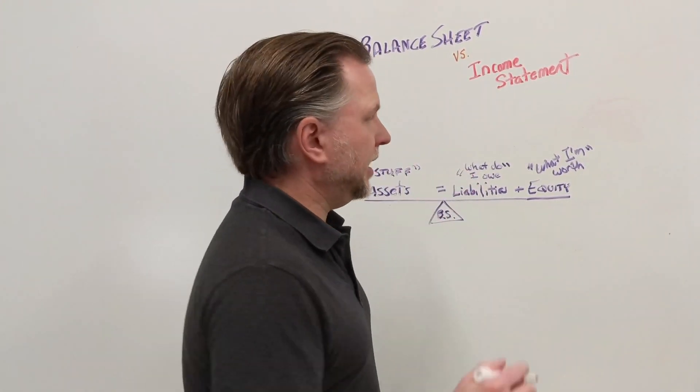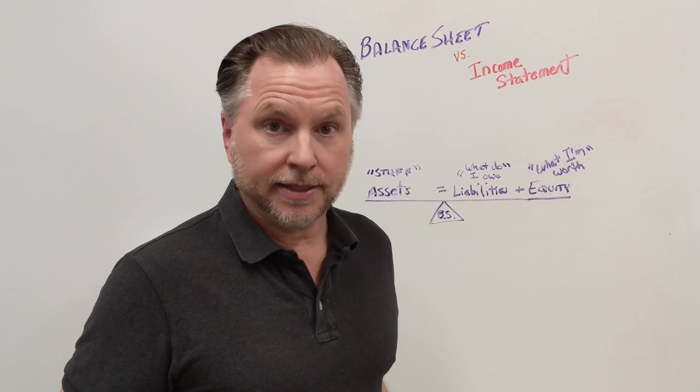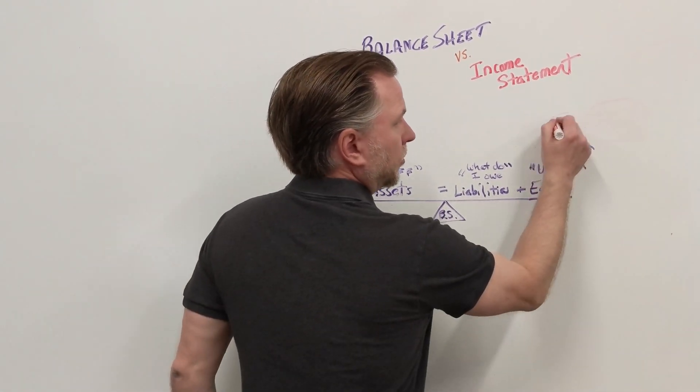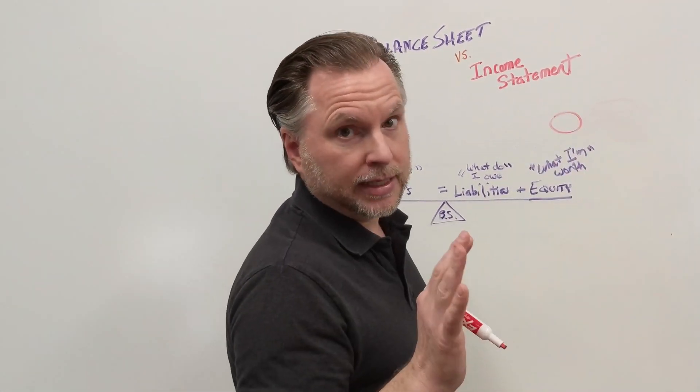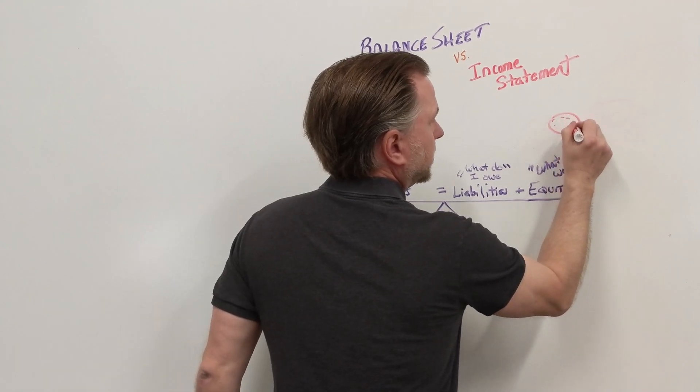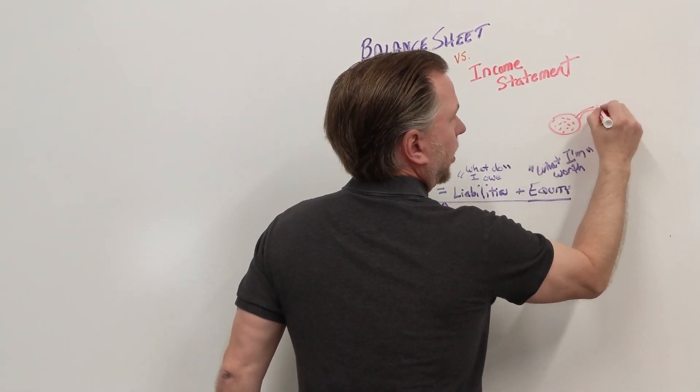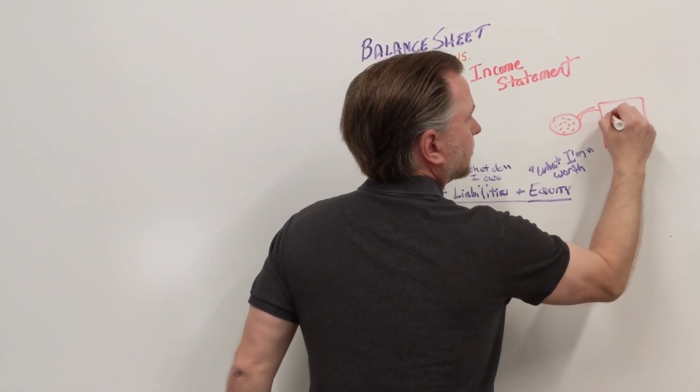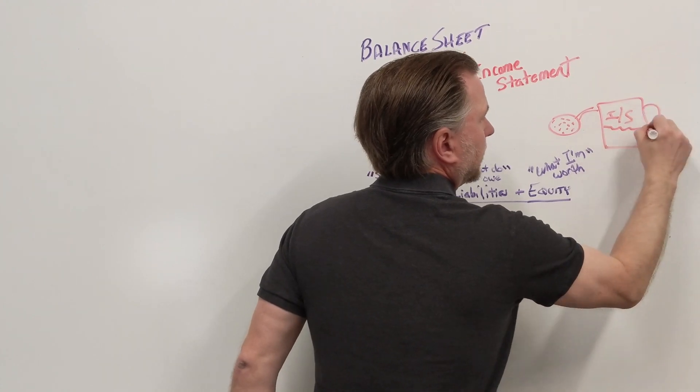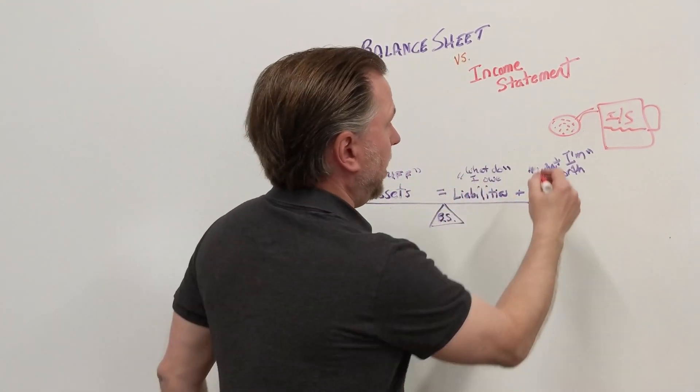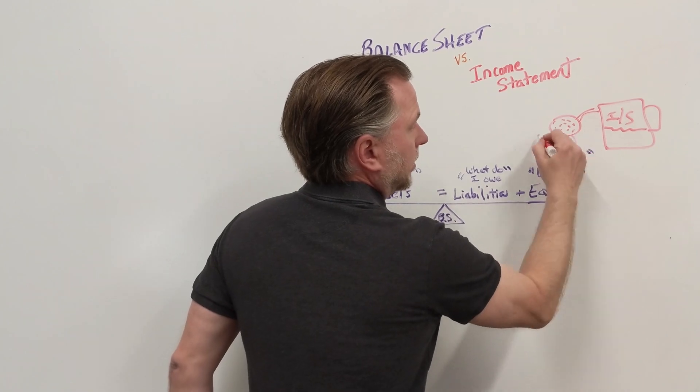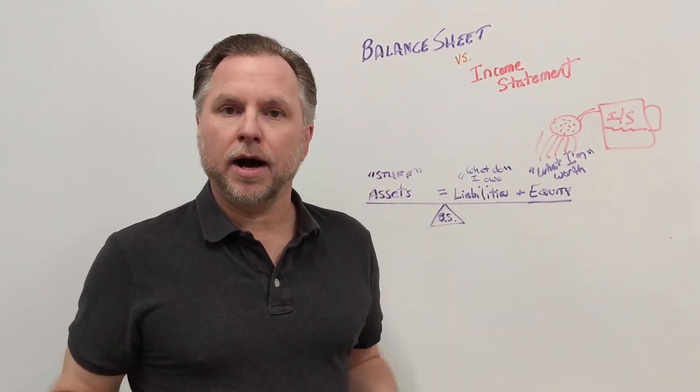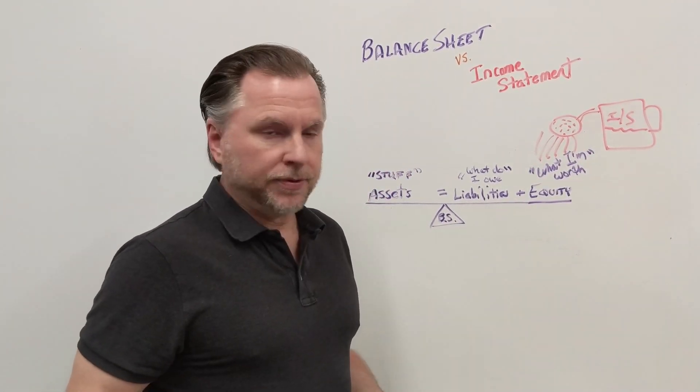So the income statement acts like a watering can to our equity. So remember, I'm an accountant, not an artist. So this is our watering can for our income statement. Our profits, as we make profits, will make our net worth go up. Our equity go up.